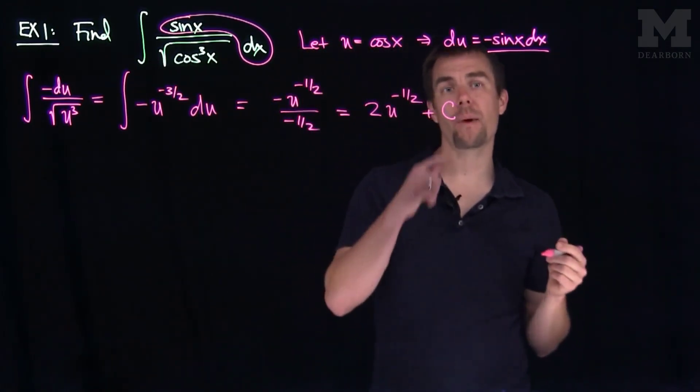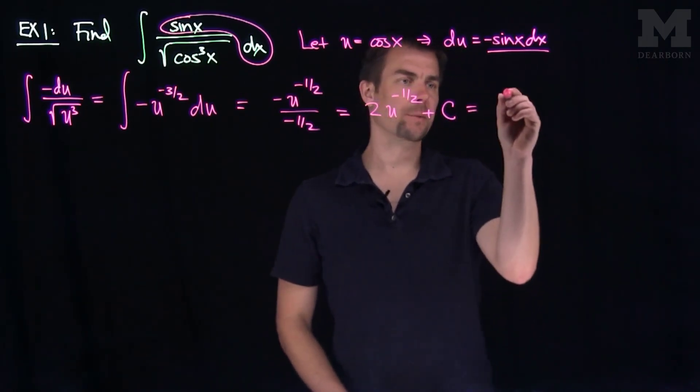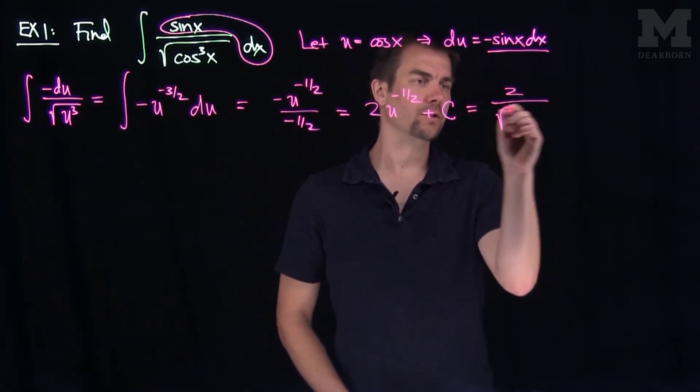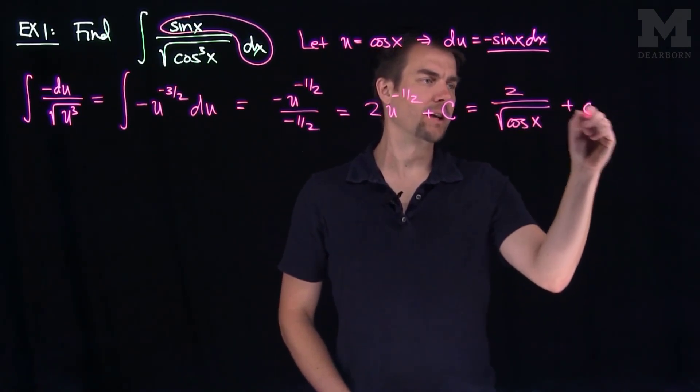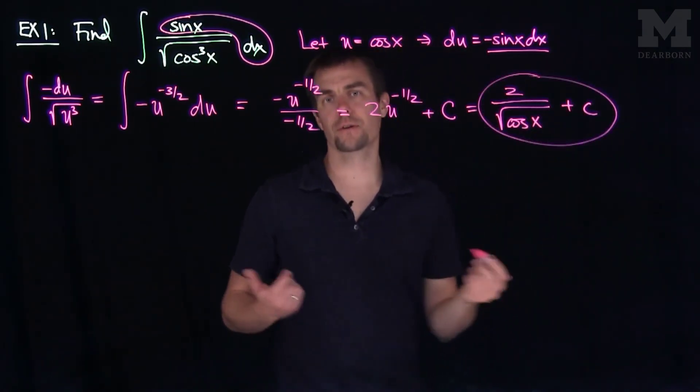Now we remember what u was. u was cosine. So this is going to be 2 over the square root of cosine of x plus a constant c. There's our first u substitution.